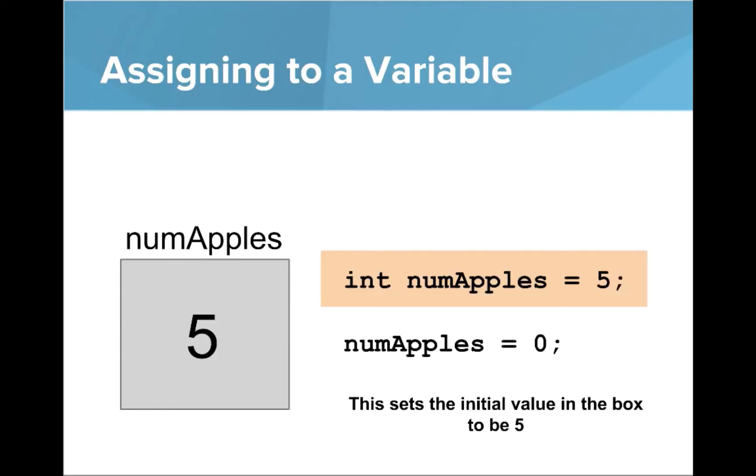Assigning to a variable lets us actually change the value in the box. Here on this first line I write int numApples equals 5, that initializes the variable numApples to 5. Then this next line numApples equals 0 sets the value in the box equal to 0. It assigns a new value to the variable. There's something really important on this line: notice that I don't have the word int again. You only write the word int or the type of the variable when you declare the variable for the first time.